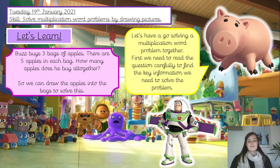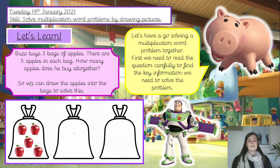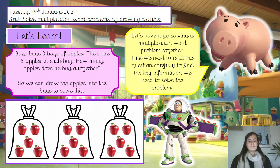We've read and we've understood. Now we need to calculate — we know we're choosing multiplication today. To solve this one, we're going to draw pictures. We can draw the apples into the bags to solve this word problem. We've got three bags of apples. In each bag there are five apples. So we've got five in the first bag, five in the second bag, and five in the third bag. We've done our method, so now we need to find our answer. We could use our five times table — five, ten, fifteen apples.